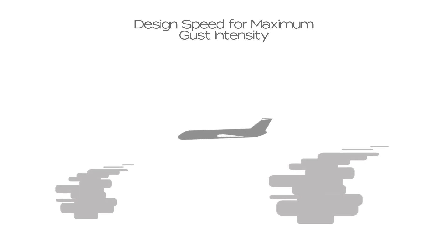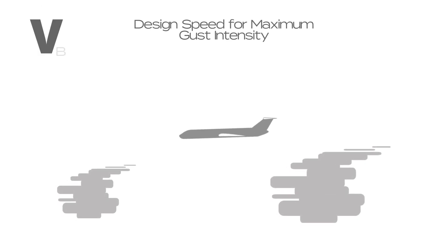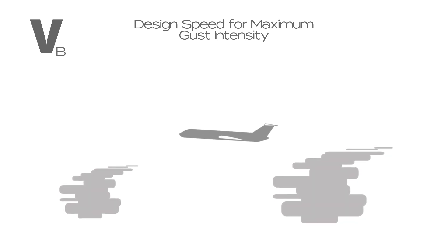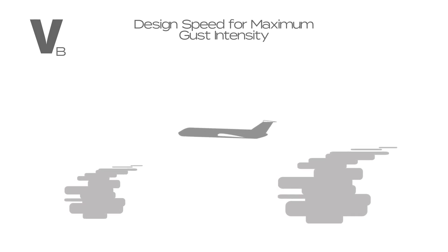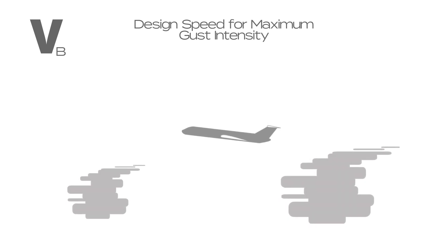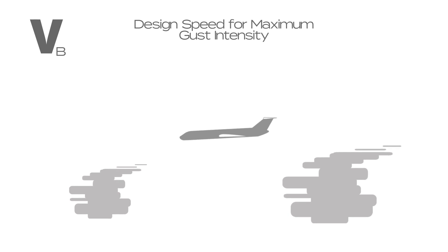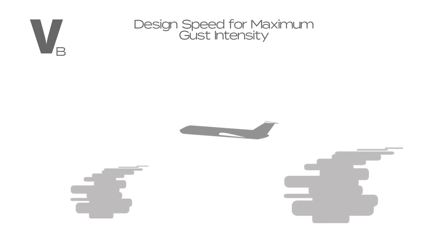Design speed for maximum gust intensity is represented by VB. This is the speed for maximum gust intensity and is the point where a gust of 66 feet per second will cause the aeroplane to stall. VB may not be higher than the speed at which a maximum gust will cause the aeroplane to exceed VA.